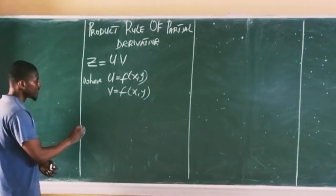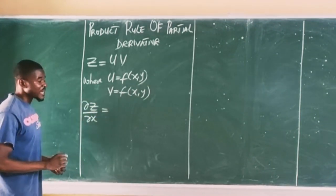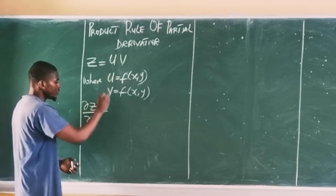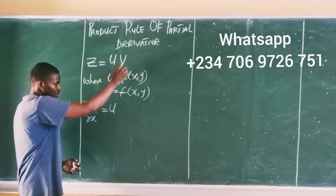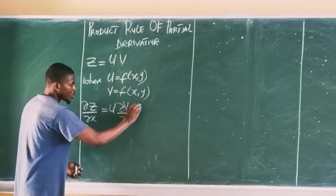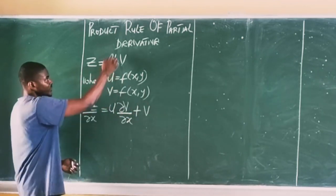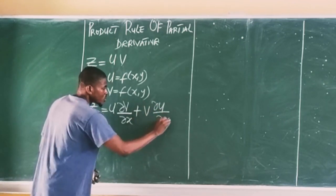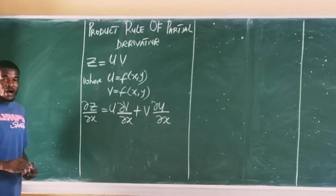The product rule for the partial derivative of Z with respect to X is: first, keep the value of U as constant, then differentiate V partially with respect to X, so I will have partial derivative of V with respect to X. Plus, keep V as constant, and differentiate U with respect to X, so I will have partial derivative of U with respect to X. This is the partial derivative of Z with respect to X using the product rule.